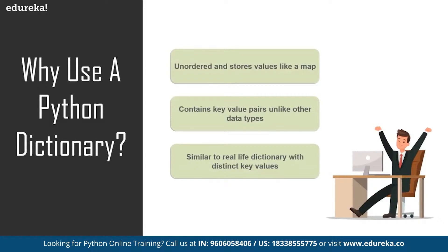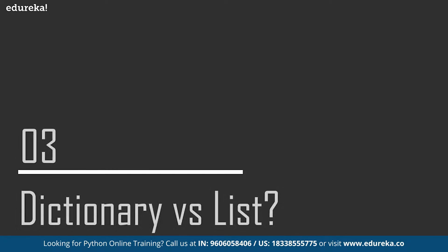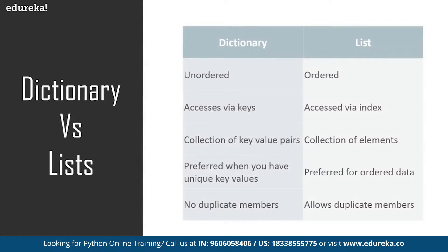Even though there are no duplicate members, we can mention duplicate members in the values, but the keys have to be unique in order to access these members. Since there are no indexes, we use the keys as indexes when accessing these elements. Now let's understand how it is different from a list in Python. A list is ordered, but the dictionary is not — dictionary is actually unordered.